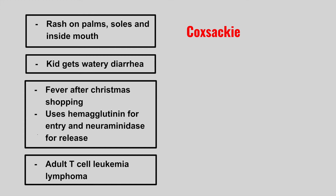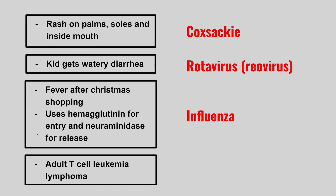The next patient is going to be a child that gets watery diarrhea. This is rotavirus, and it belongs to the reoviruses. The next patient is going to get a fever after Christmas shopping. This virus uses hemagglutinin for entry and neuraminidase for release. This is influenza. The next virus causes adult T cell leukemia lymphoma. This is HTLV-1.